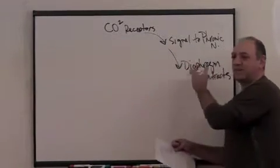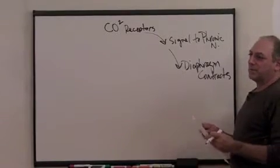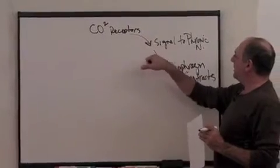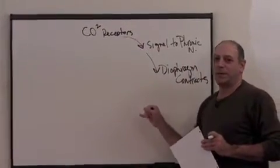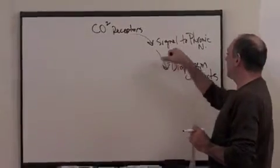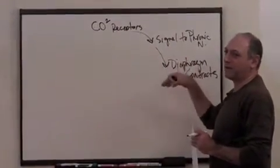Why am I listing these even as separate things? Well, my reasoning is anywhere along any of these arrows I'm going to draw, something can happen that gets in the way. There are things that can prevent the diaphragm from responding to the phrenic nerve and so on.